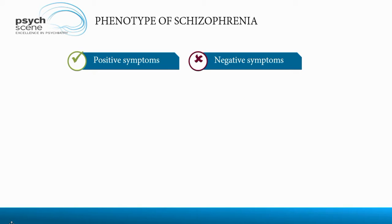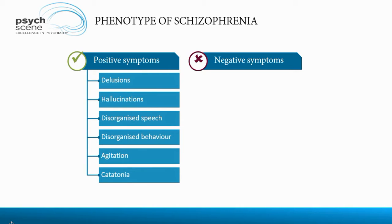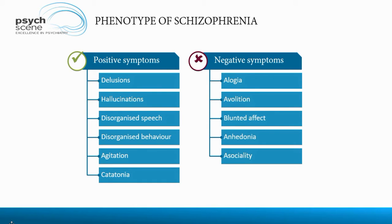One can think about the phenotype of schizophrenia in terms of positive symptoms — delusions, hallucinations, disorganized speech, disorganized behavior, agitation, and in extreme cases catatonia — but one should also think about the negative symptoms arising from the mesocortical pathway linked to the dorsolateral prefrontal cortex: alogia, avolition, blunted affect, anhedonia, and asociality.